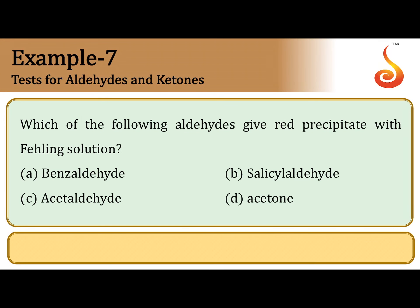Which of the following aldehydes give red precipitate with Fehling's solution? Fehling's solution contains Cu²⁺ ions complexed with OH⁻ ions.